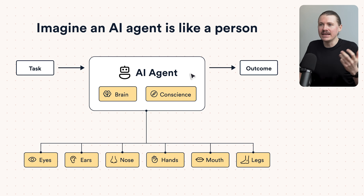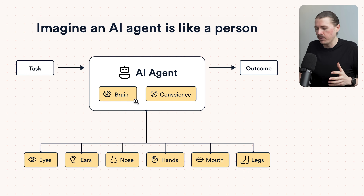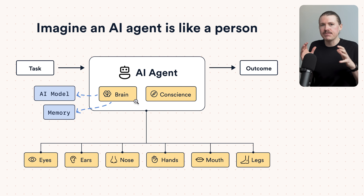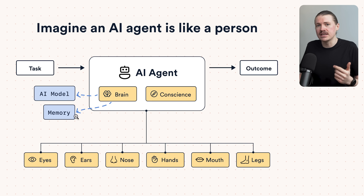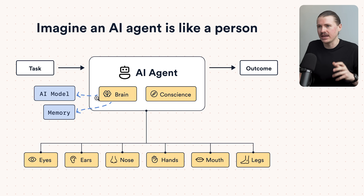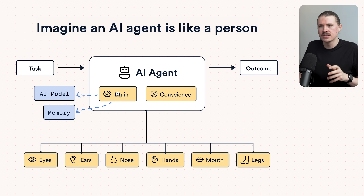When a person needs to process a task, first we need to be able to think about how we would do it, and for that we use our brain. For AI agents, the brain is basically made up of two parts: first, an AI model — a large language model like ChatGPT, Gemini, or Claude — but also memory. Memory is what gives our AI agents the ability to remember past interactions. The model gives the agent the ability to process and make decisions, whereas the memory allows the agent to remember past interactions.